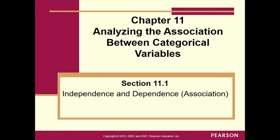Good day stats students. Today we're going to talk about section 11.1, where we'll be revisiting the analysis of association between two categorical variables. Back in chapter 3 we had a rule of thumb to determine if variables are associated or dependent. Now that we've gotten through hypothesis testing, we can use those tools to actually run a hypothesis test. We'll no longer use the rule of thumb, but it has the same underlying principles.